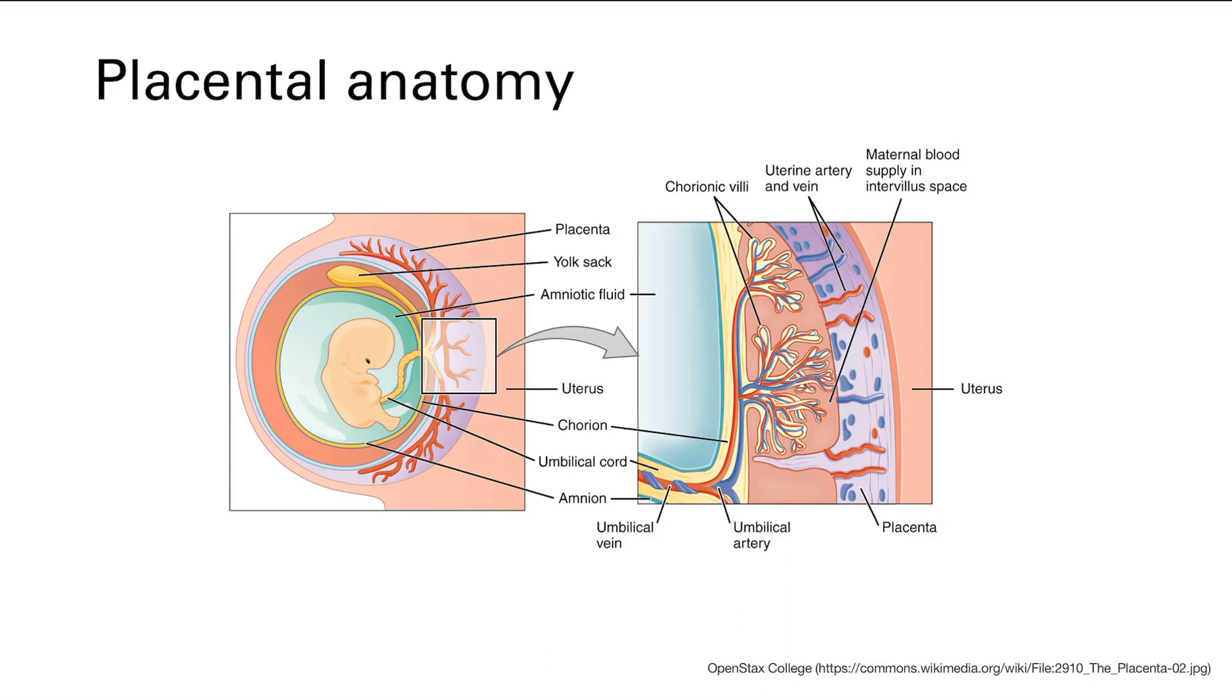And what does the placenta do? The placenta basically functions as a way to get the fetus all the nutrients and the oxygen it needs from the mother, and also allows for waste elimination.